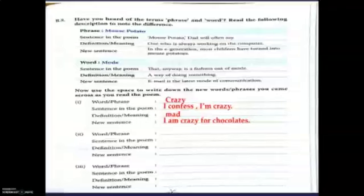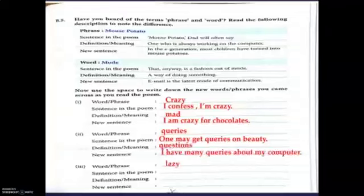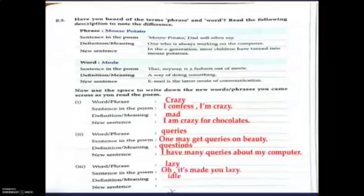Next word is 'queries' — the sentence in the poem is 'one may get queries on beauty,' the meaning is 'questions,' and the new sentence is 'I have many queries about my computer.' Next word is 'lazy' — the sentence in the poem is 'oh, it has made you lazy,' the meaning is 'idle,' and the new sentence is 'computer has made me lazy.'